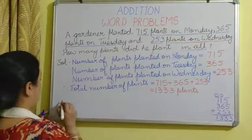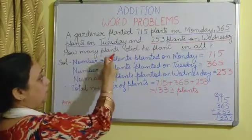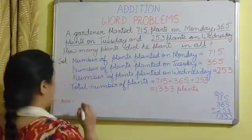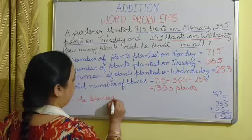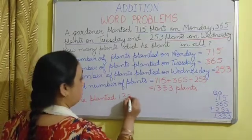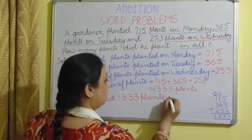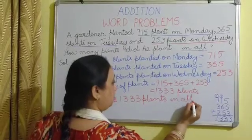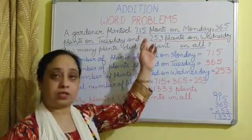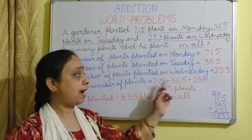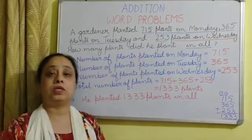Now we write the answer. The question says: How many plants did he plant in all? So the answer is: He planted 1333 plants in all. You see it is so easy to form the statements from the question itself, then add up, do the calculation, and write the answer. Now we are going to do the next word problem.